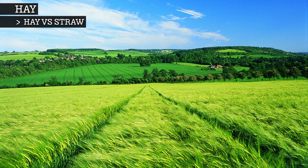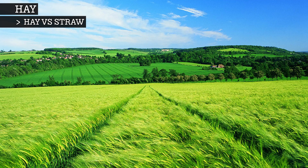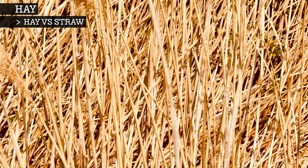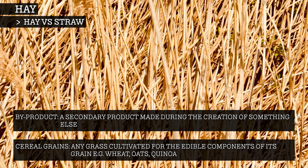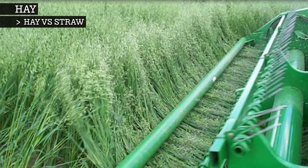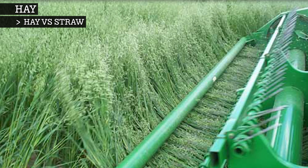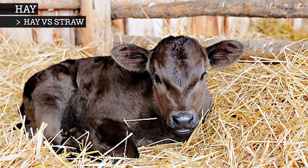Unlike straw, hay is specifically grown for the purpose of animal fodder, whereas straw is a by-product of cereal grains after they have been harvested and stripped of their grain. Hay is sometimes cut pre-bloom so that it is harvested to give peak nutrition to the animals it will feed. Straw is more often used as animal bedding or as a source of dietary fibre.